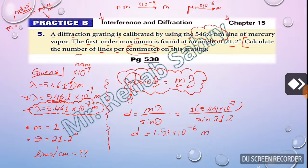It will be 1.51 times 10 to the power of negative 6. What's the measuring unit? It's meter. So d here is 1.51 times 10 to the power of negative 6 meter.